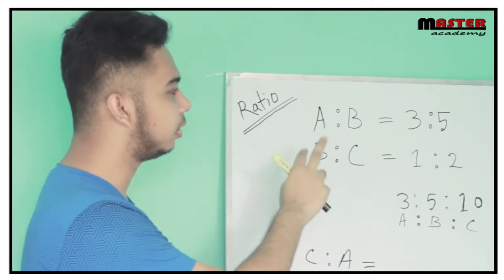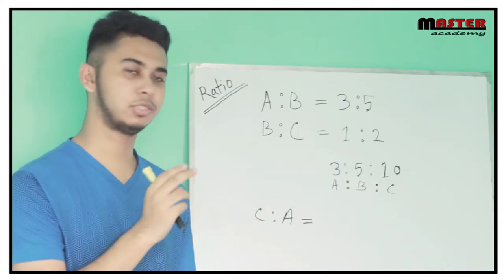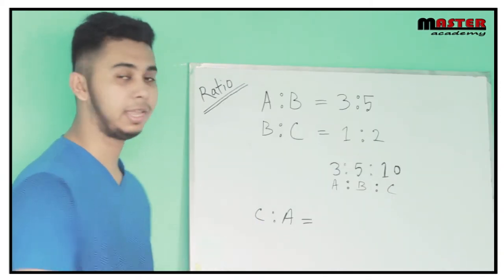A is to B is 3 to 5, B is to C is 1 to 2. So, C is to A is what?